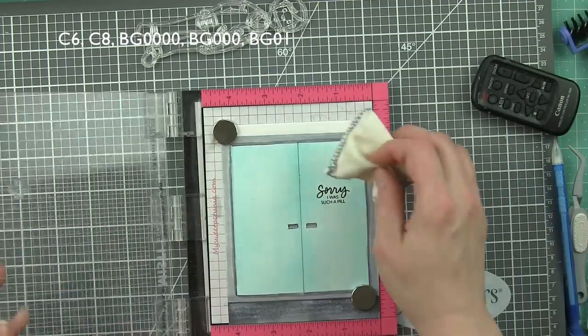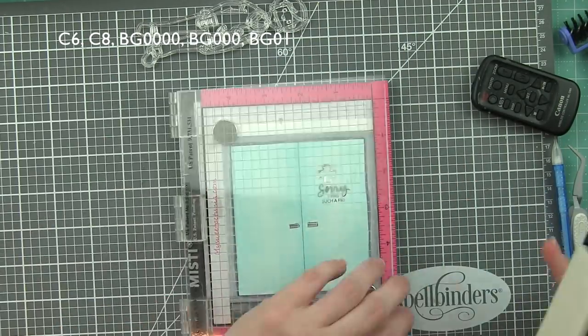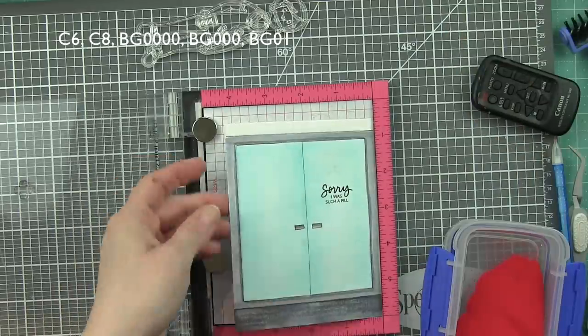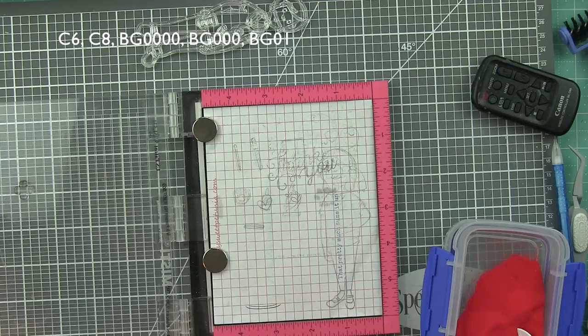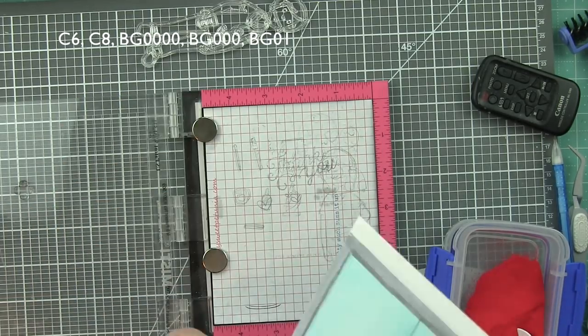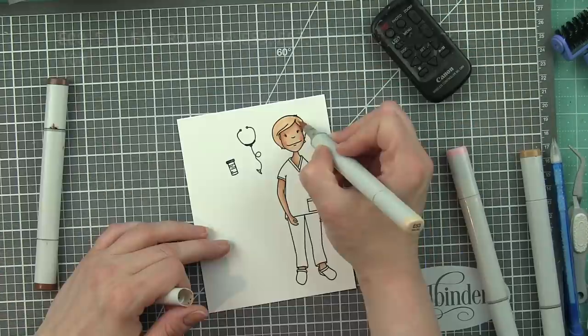I decided instead of using a red ink, I stamped this with Versamark and embossed with red embossing powder so that it would be really, really red and really stand out on my little medical clear glass door here.